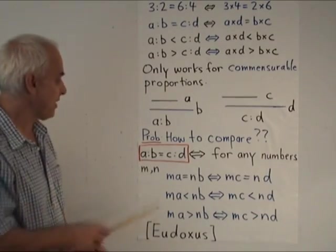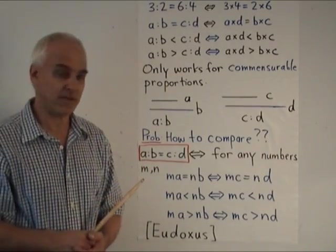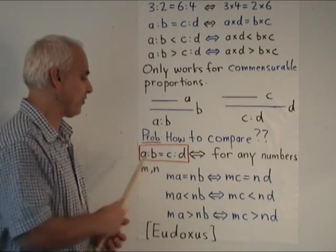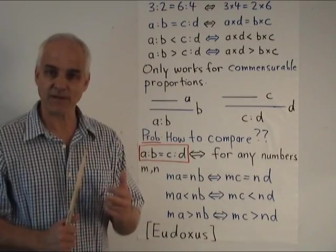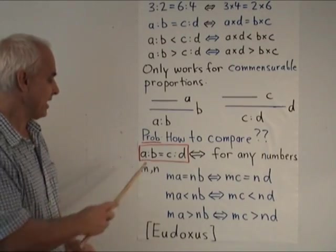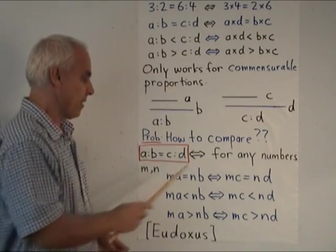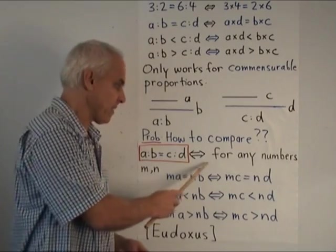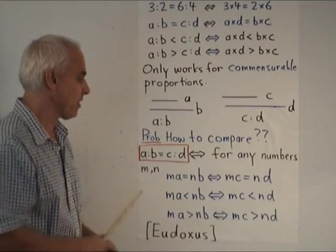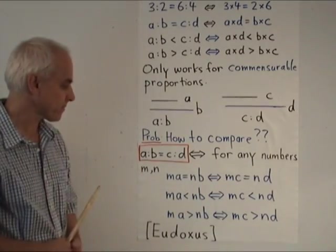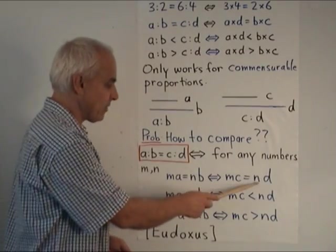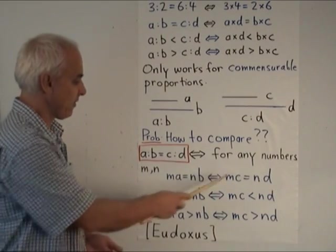Here is how he defined equality between two proportions, between magnitudes, even if those proportions were perhaps incommensurable. He said that A to B equals C to D, precisely when, for any numbers, and when I say number, I mean natural number, like 1, 2, 3, 4, for any numbers M and N, if M times A equals N times B, then M times C equals N times D, and conversely.